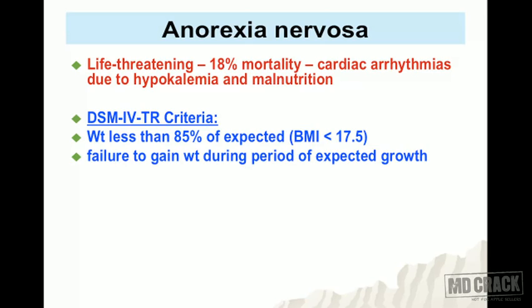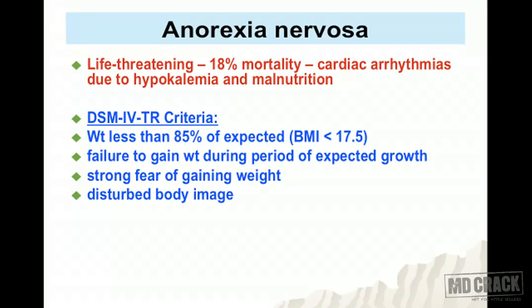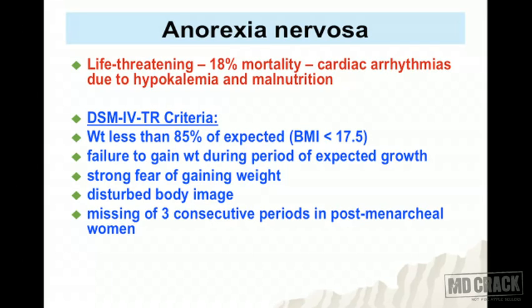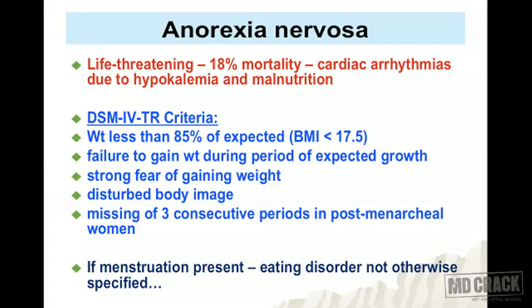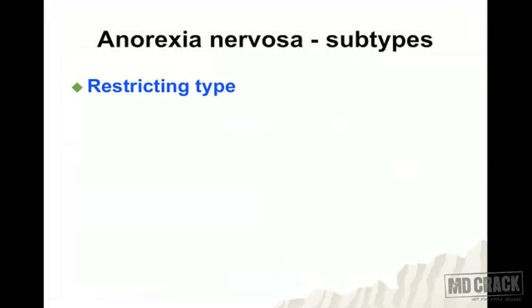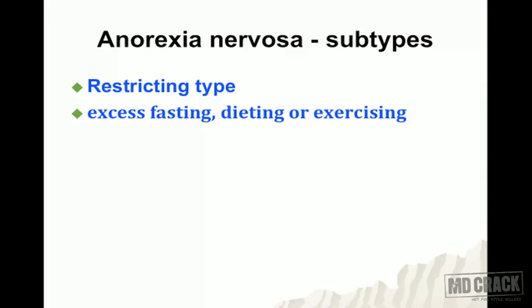Additional DSM-IV-TR criteria include failure to gain weight during the period of expected growth, a strong fear of gaining weight, disturbed body image, and the absence of three consecutive menstrual periods in postmenstrual women. If menstruation is present but all other criteria are met, the diagnosis is eating disorder not otherwise specified (EDNOS), not anorexia nervosa.